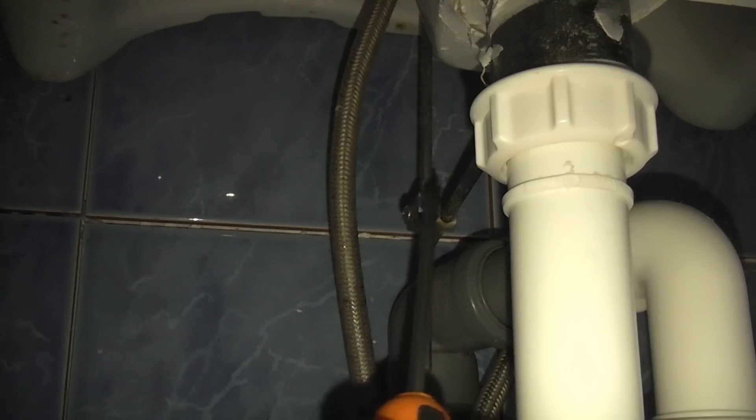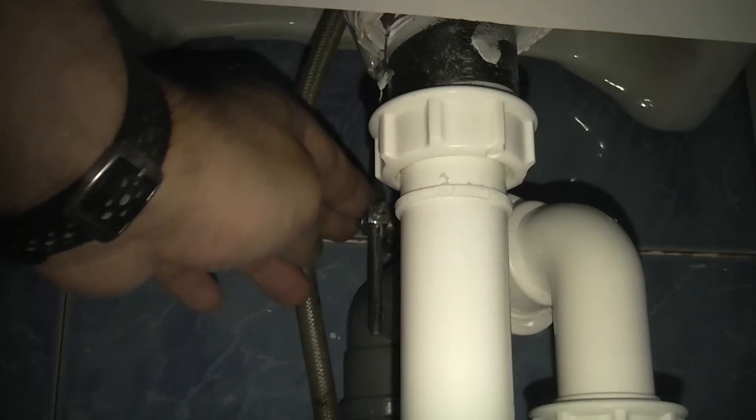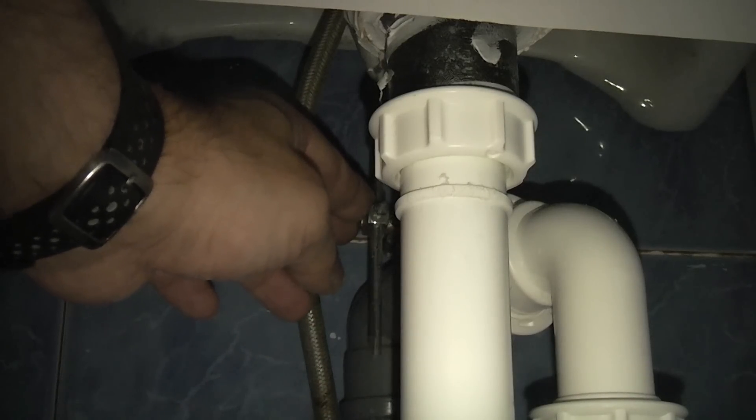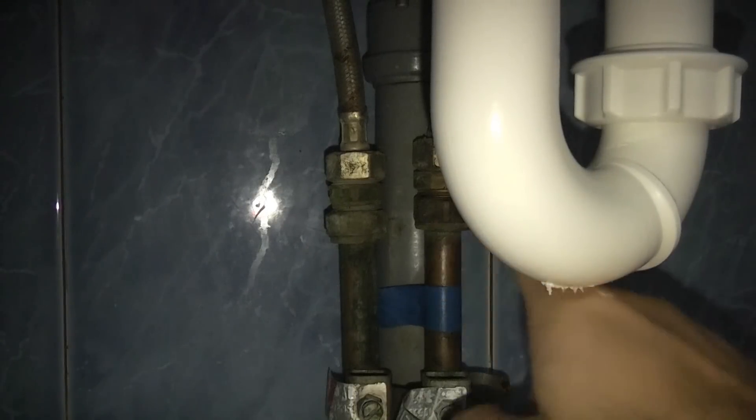So if you look just there you can see the slotted screw and that is holding that metal bar on. So we need to put a screwdriver in there and undo that. Now we've got that loose we can actually pull that out once we remove the tap. So that one is the hot obviously and that one is the cold.